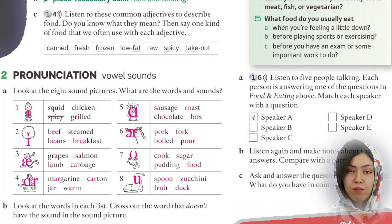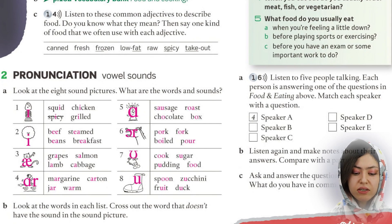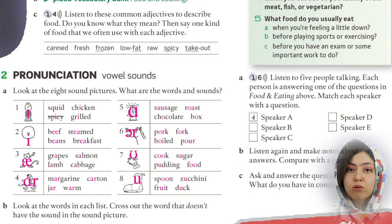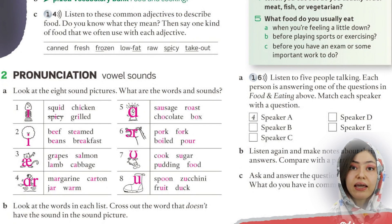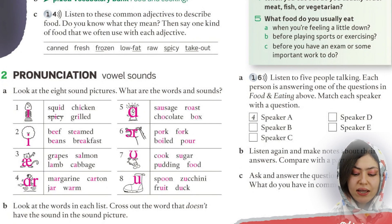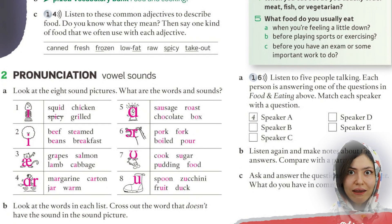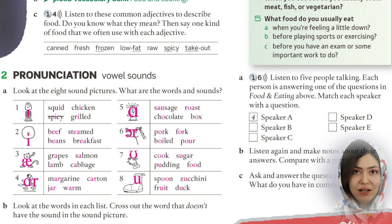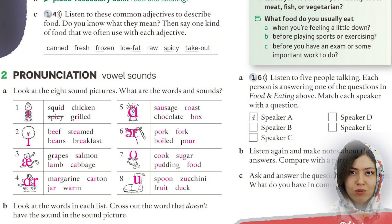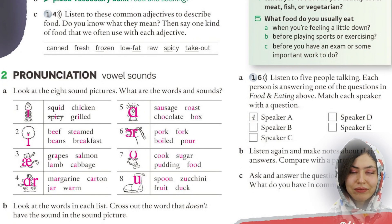Now we are done with vocabulary and turning to pronunciation. Pay attention to the vowel sounds. The first sound is the short 'I' sound: squid, chicken, spicy — these have the short I. Grilled also has the I sound. These pronunciations all belong to the I sound.